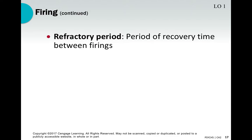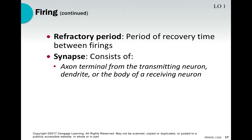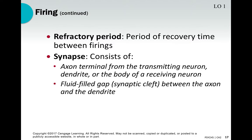Neurons have a refractory period where they must recover — they don't just keep firing over and over. There's always a recovery period between firings. The synapse is the space between an axon and a dendrite of adjacent neurons — also called the synaptic cleft. This is where neurotransmitters are sent from one neuron to the other.